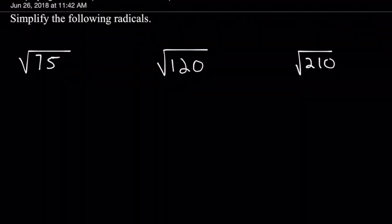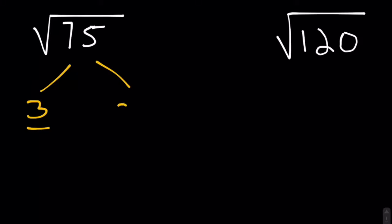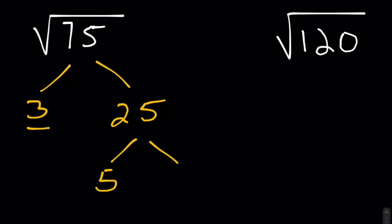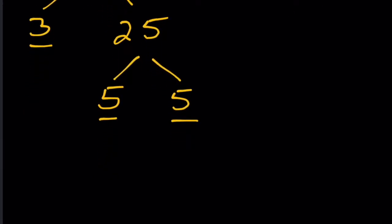Let's take a look at the square root of 75. The two easiest numbers that multiply to 75 are 3 and 25. I'm going to underline my 3 because that is a prime number. 25 can be broken down a little further into 5 times 5, both of which are prime, and therefore we are done with our factor tree.